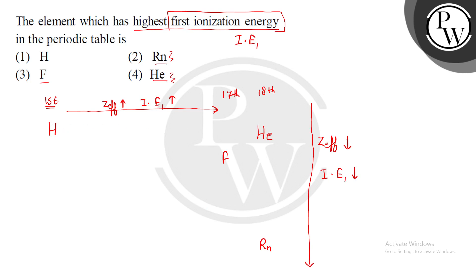So if we talk about first ionization energy: going left to right it generally increases, and going top to bottom it generally decreases. So helium, being at the top right of the noble gases, is coming out with a higher value. Radon, going top to bottom, decreases. We have electronic configurations: hydrogen has atomic number 1 with 1s1; fluorine has atomic number 9.